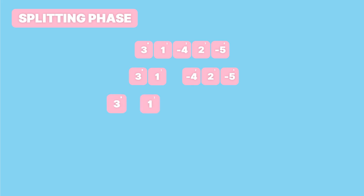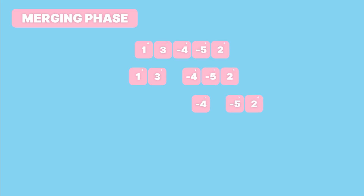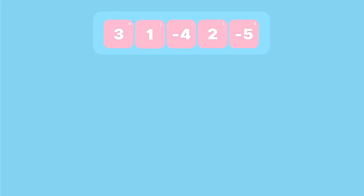We continue splitting until there's only one element in each array. The left array becomes two one-element arrays, and for the right array one part becomes a one-element array while the other becomes a two-element array, which is then split into two one-element arrays. Once we have split the entire array into one-element arrays, we begin the merging phase, starting from the left side.